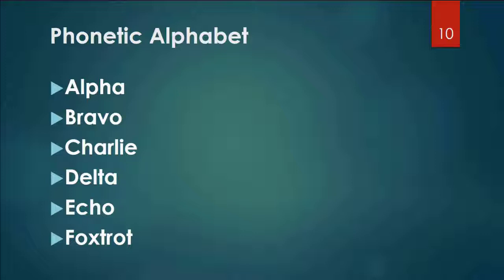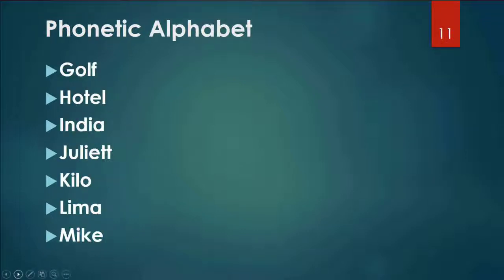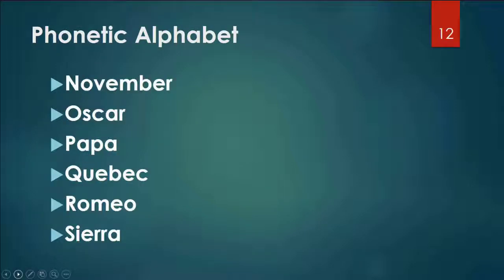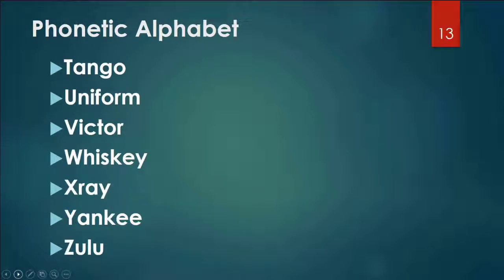So we're going to run through these so that you're familiar with them. A Alpha, B Bravo, C Charlie, D Delta, E Echo, F Foxtrot, G Golf, H Hotel, I India, J Juliet, K Kilo, L Lima, M Mike, N November, O Oscar, P Papa, Q Quebec, R Romeo, S Sierra, T Tango, U Uniform, V Victor, W Whiskey, X X-Ray, Y Yankee, and Z Zulu.